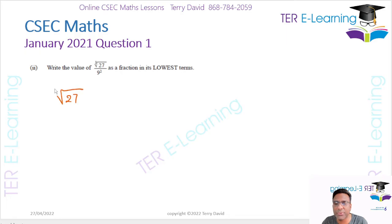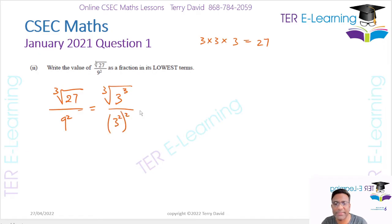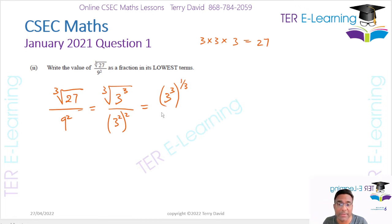Now 27 can be written as 3 cubed, because 3 multiplied by 3 multiplied by 3 gives 27. So we find the cube root of 3 cubed divided by 3 squared. We can also replace 9 with 3 squared, so the denominator becomes 3 squared, squared. On the top part I can write 3 cubed raised to the power one third, because that's what cube root means.